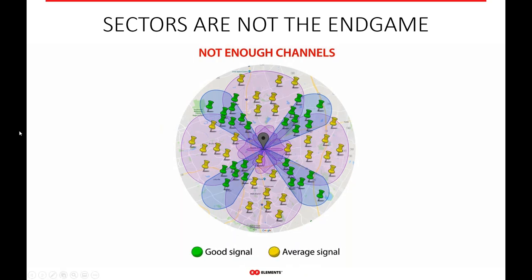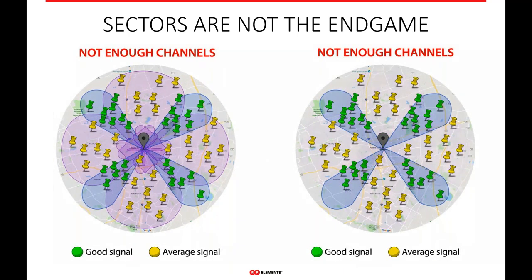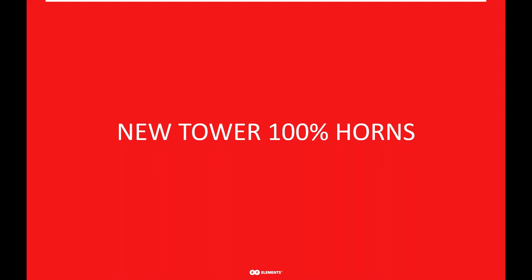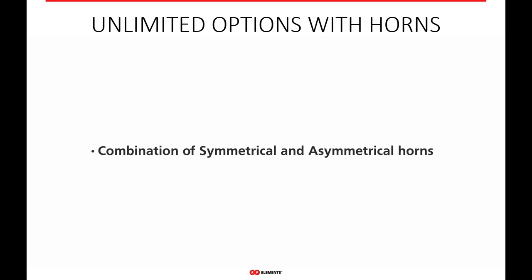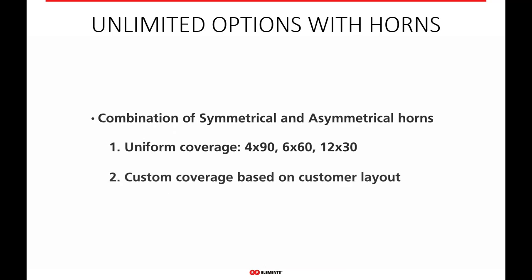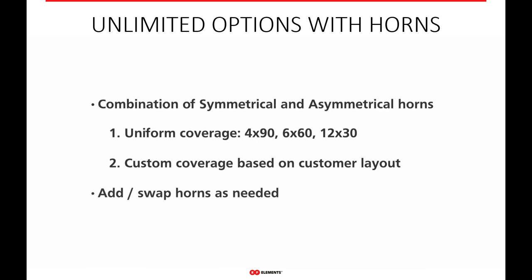As long as you continue to have sectors on your towers, you're going to have side lobes, co-location issues, and overlap and interference. To really see the amazing things you've heard customers talk about with horn performance, you need to go to everything with horns. When you consider the ability to combine symmetrical and asymmetrical horns together, there's really an unlimited option for building out your tower coverage. We're moving now to discuss 100% horn networks and the different options available.